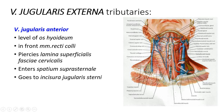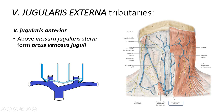The vein goes towards the incisura jugularis sterni, where it pierces the lamina superficialis fasciae cervicalis and appears inside the spatium suprasternale. Here the right and left veins make an anastomotic arch — the arcus venosus juguli — then change direction going more laterally to cross the vena jugularis interna and flow into the vena jugularis externa.